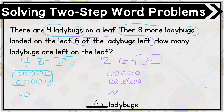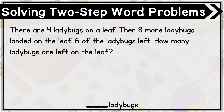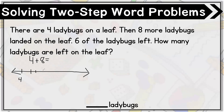Now let's try solving this again in a different way. This time, I want to solve it using a number line. I'll draw an open number line. Remember, the first part is four plus eight, which tells us how many ladybugs are on the leaf. So I start at four and add eight more, counting on: five, six, seven, eight, nine, ten, eleven, twelve.